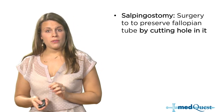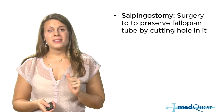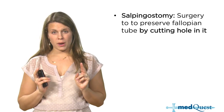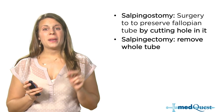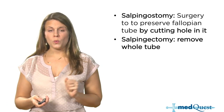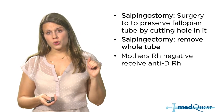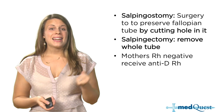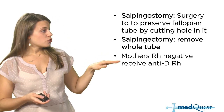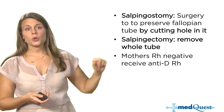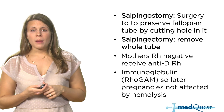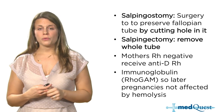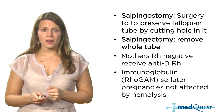For surgical management of ectopic pregnancy, a salpingostomy is done to potentially preserve the fallopian tube — you cut a hole in the tube to excise the ectopic. In contrast, a salpingectomy removes the entire fallopian tube with the ectopic inside. Both are considered equally efficacious. In any mother who is Rh negative, make sure you give anti-D RhIG (RhoGAM) — an immunoglobulin that prevents formation of antibodies so that later pregnancies are not affected by hemolysis.